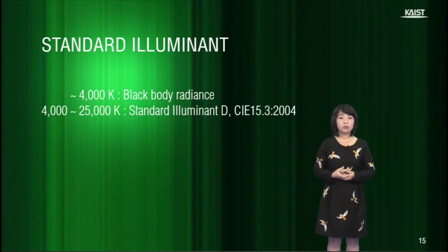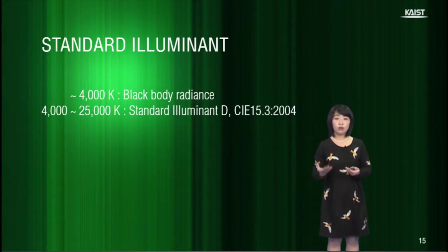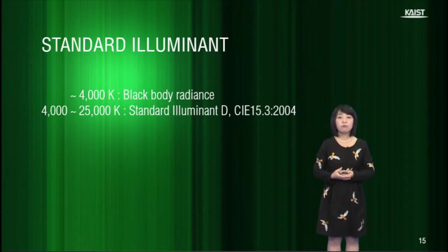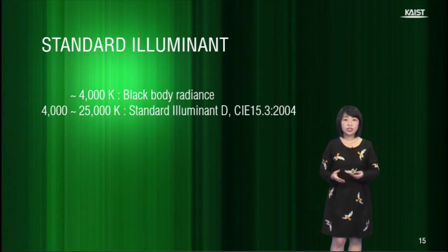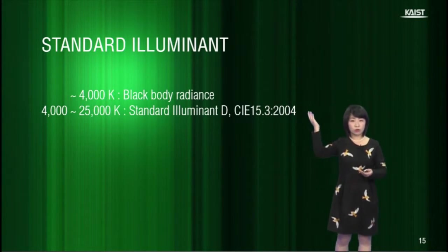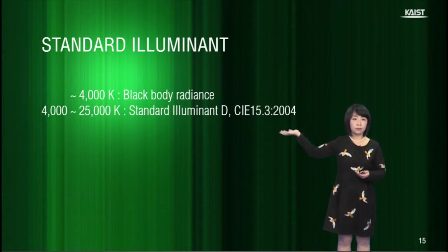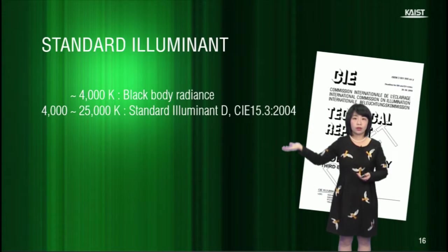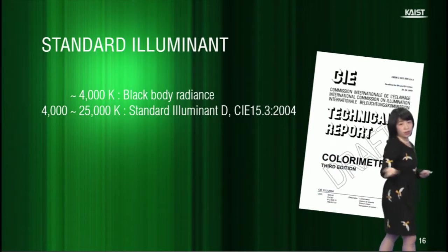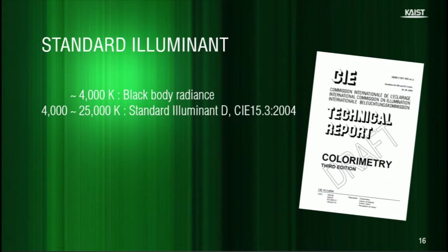The International Commission on Illumination, CIE, ruled the standard illuminant based on the human experience of the sunlight on the earth. In particular, for the range between 4000 and 25,000 Kelvin, the CIE defines the formula. The technical report is updated in 2004 and all international standards related to illumination are referring to this report.